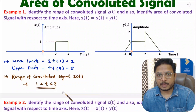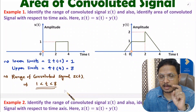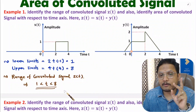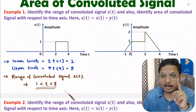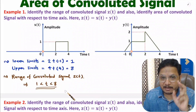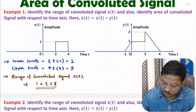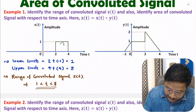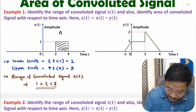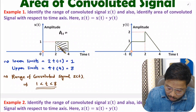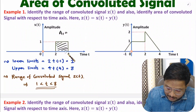Now I will explain the area covered by the convoluted signal. To identify it, we first need to identify the area covered by individual signals. So first we identify the area covered by X(t) with respect to time — let us call that A1.